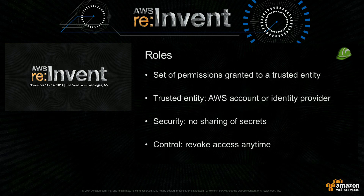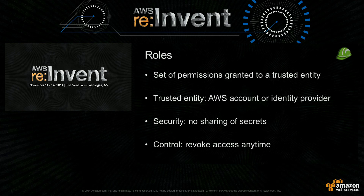So let's start with roles. Roles in AWS mean nothing but a set of permissions that are granted to a trusted entity. This entity can be another AWS account or another identity provider. Roles have these two nice properties: security and control. When you use roles, there is no secret sharing involved, and you can easily revoke access by changing the permissions on the roles.